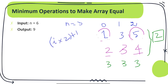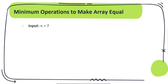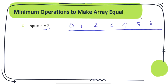Now consider n = 7, which means the size of the array is 7, so indices go from 0 to 6. Filling in the values based on i*2 + 1, we can observe these values are nothing but the sequence of odd numbers starting from 1 up through the size of the array.